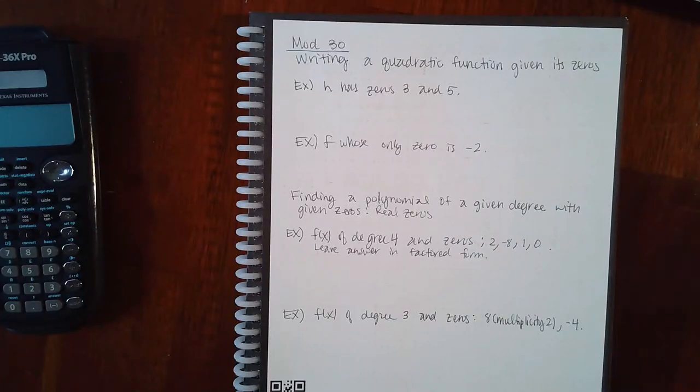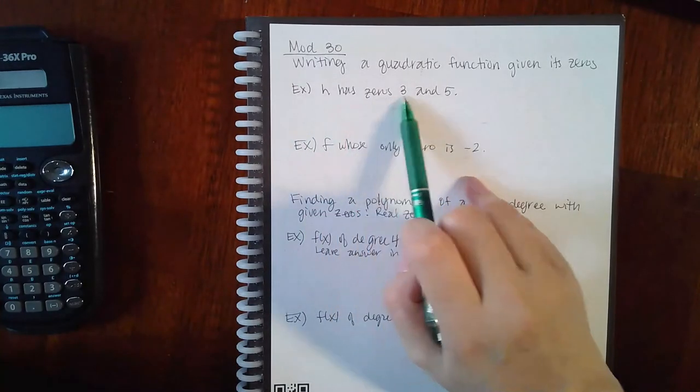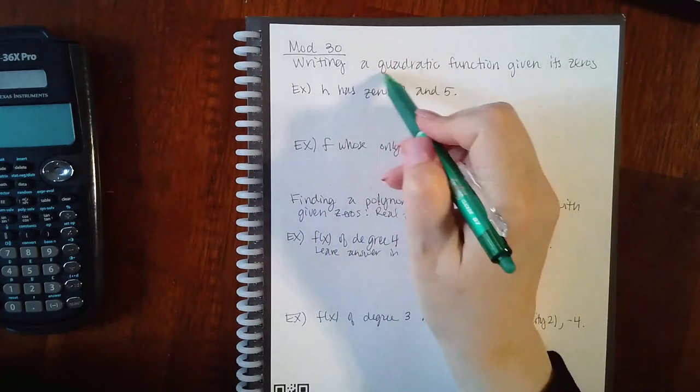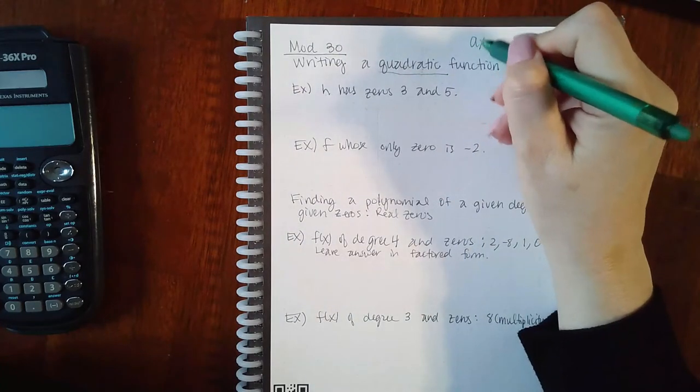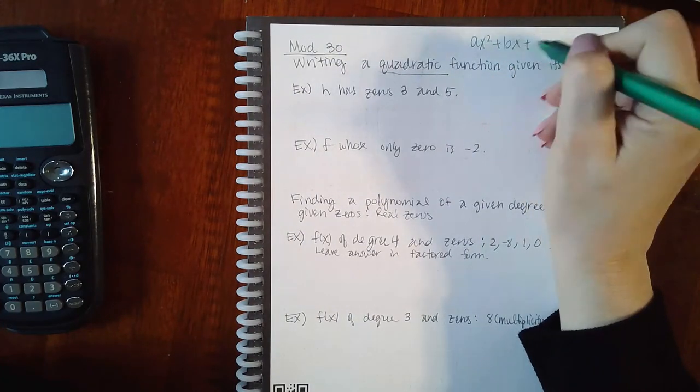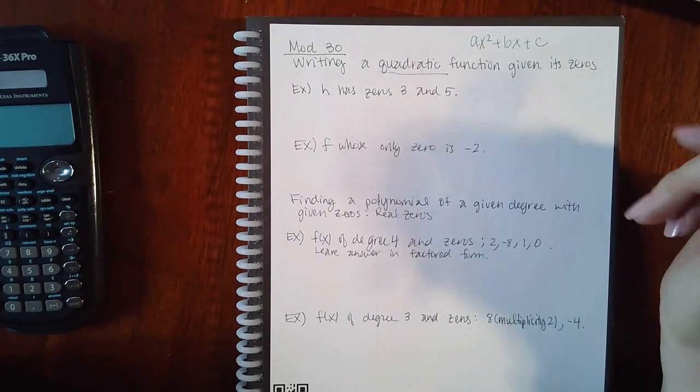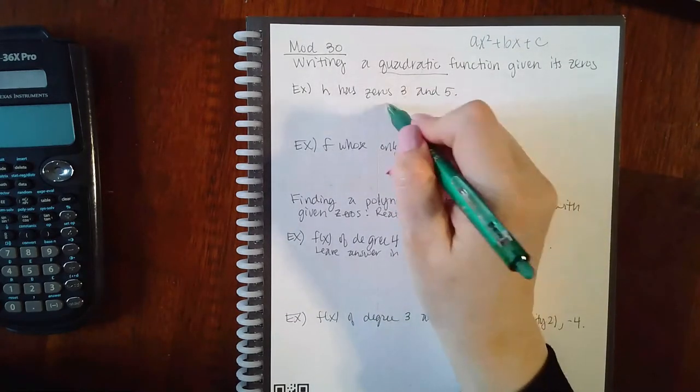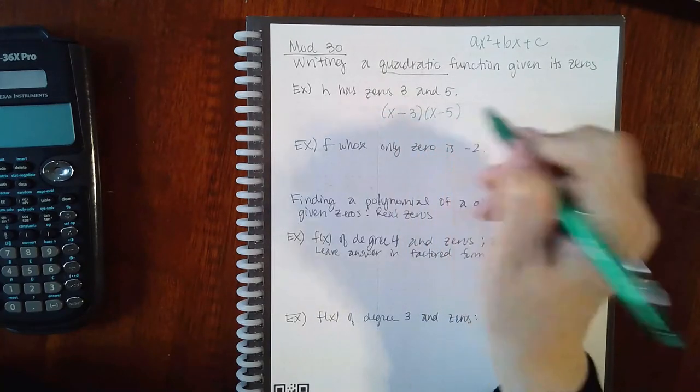Okay, this is module 30. The first topic is writing a quadratic function given its zeros. Here it says h has zeros of 3 and 5. You're doing a quadratic function which means two zeros. Since these are my two zeros, it means x minus 3 and x minus 5 are the factors.